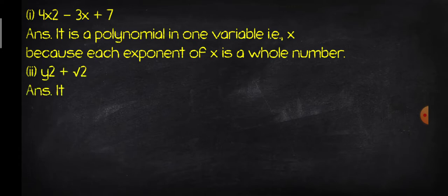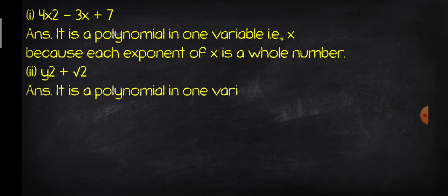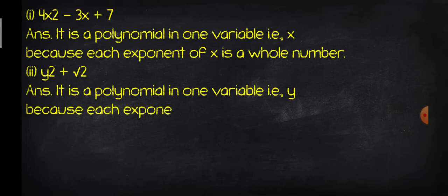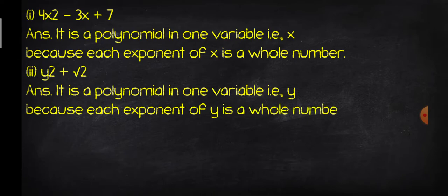Second part: y² + √2. So the answer is it is a polynomial in one variable because each exponent of y is a whole number — every exponent of y is a whole number.